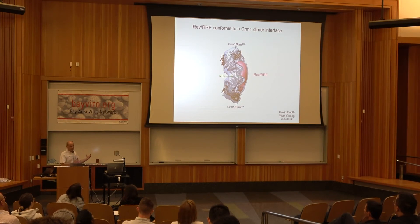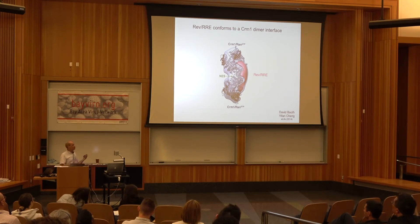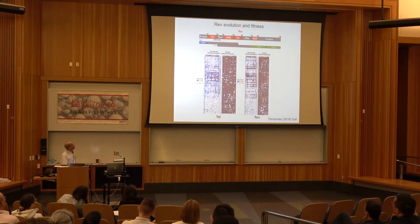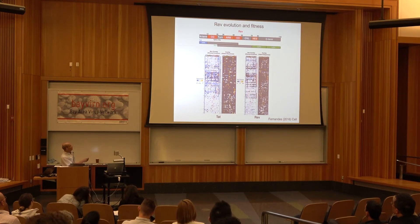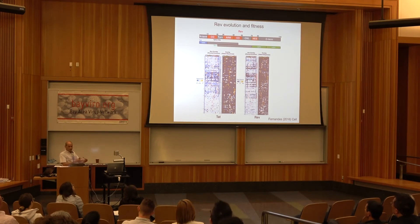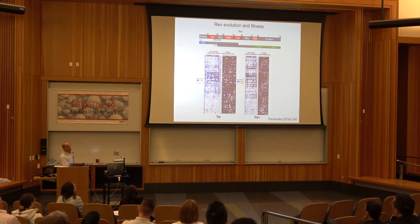REV shows a lot of plasticity and moving parts, raising questions about how the protein evolves. Adding a further layer of complexity: REV in the context of the virus has overlapping reading frames with two other proteins — TAT and envelope. The protein must evolve plasticity not only for itself but within constraints imposed by these other reading frames. Jason Fernandez constructed viruses that separated out the overlapping reading frames and exhaustively examined every possible mutation to determine fitness values for each position.